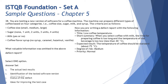The question asks: with all that information given, what valuable information was omitted from the defect report? The defect report includes title, short summary, expected result, severity, and priority. The options are: A — actual test results; B — identification of the tested software version; C — status of the defect; D — ideas for improving the test case.